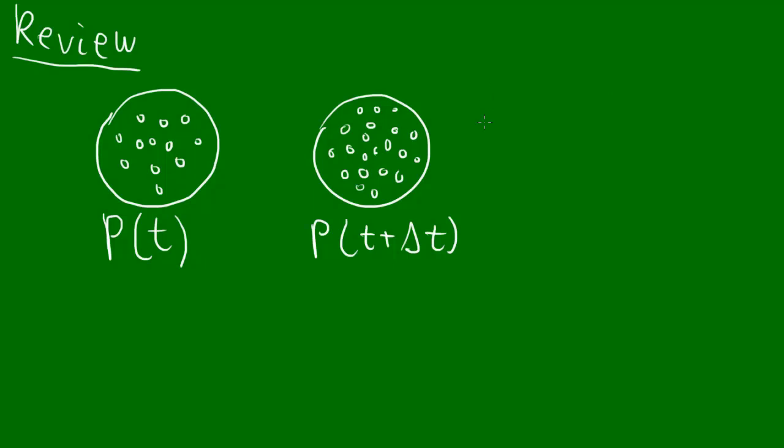And we also have some constant k. k is going to be a proportionality constant that relates the growth of the bacterial colony to the amount of bacteria you currently have. Because in our example, if there's a larger number of bacteria in the dish, then they're going to increase in population faster because there's a larger number of bacteria that can divide.